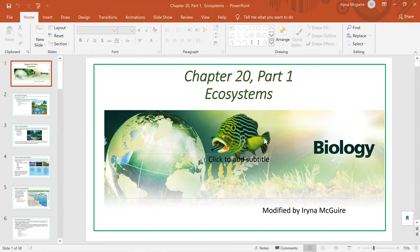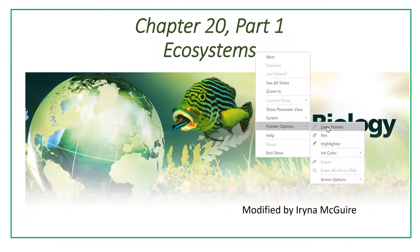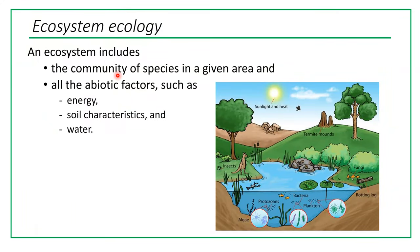Ecosystems include a community of species in a given area and all the abiotic factors such as energy, soil characteristics, and water. In previous lectures we talked about populations and communities. At the community level we only talk about living organisms, but at the ecosystem level we also include all the environmental factors that affect the life of a community, their well-being, and their interaction with each other and their environment.